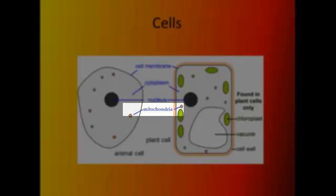The mitochondria are the powerhouse of the cell. It's where energy production takes place through the process of respiration, one of the seven life processes.